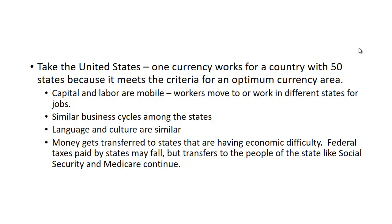The US also has similar business cycles among the states. There are times when one region is suffering economically while others are doing better, but generally the business cycles across states are quite similar. There is also a common language and similar cultures, and money is able to be transferred to states having economic difficulty. For example, federal taxes paid by struggling states may fall, but transfers like Social Security and Medicare continue, effectively transferring more net money to them.